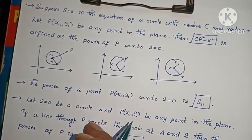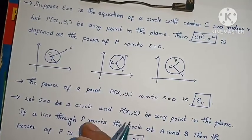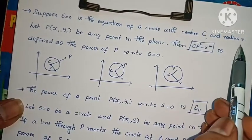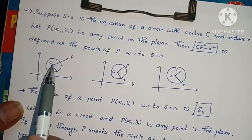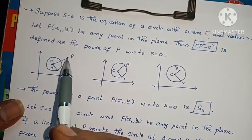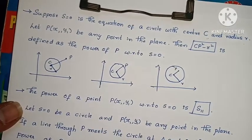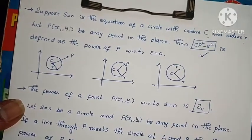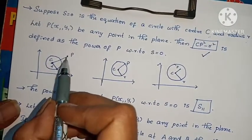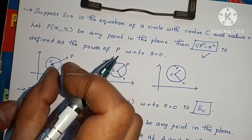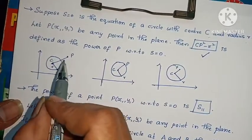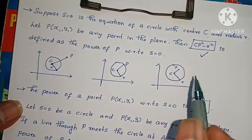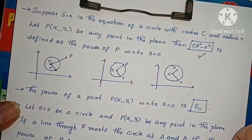Now, power of a point P. Given one point P at (x1, y1), a circle with center C and radius R, the power of the point formula is CP squared minus R squared. The CP value is the distance from center to point. So power of point = CP squared minus R squared.